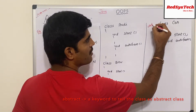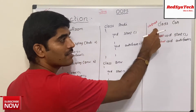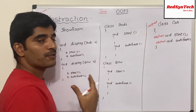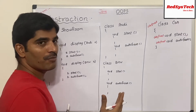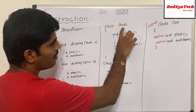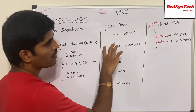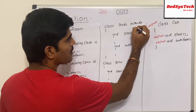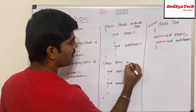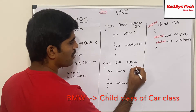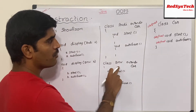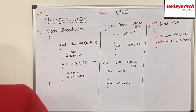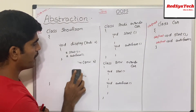Since both methods are abstract, I should make the class itself abstract as well. I use the abstract keyword at the class level to define that this is an abstract class — meaning this class highlights only the services offered but won't tell the implementation. Since both RD and BMW belong to the Car class, I can use the extends keyword: class RD extends Car, and class BMW extends Car, because both are of car type.